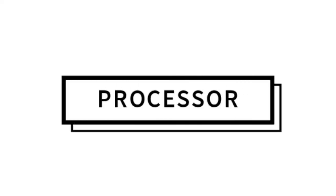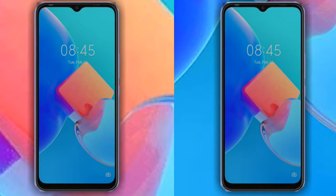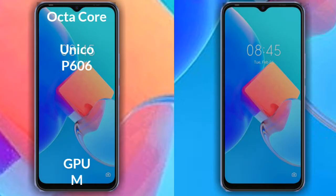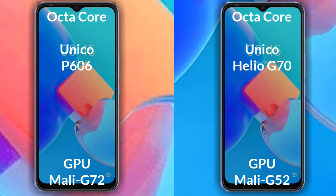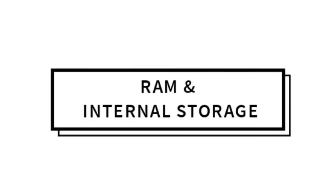Let's talk about the processor and GPU of both phones. The Tecno Spark 8C has a Unisoc processor with a Mali-G72 GPU. The Tecno Spark 8P has a MediaTek Helio G70 processor with a Mali-G52 GPU.